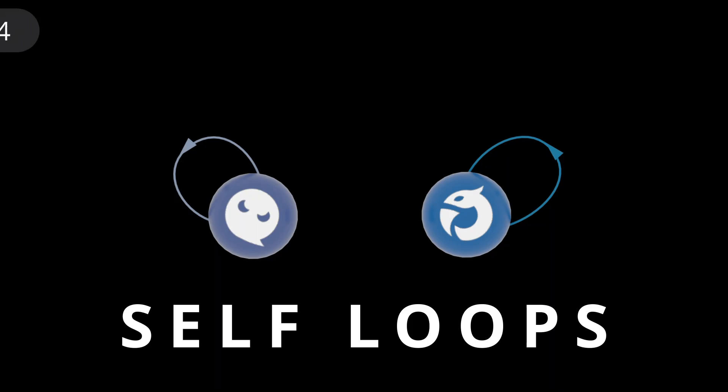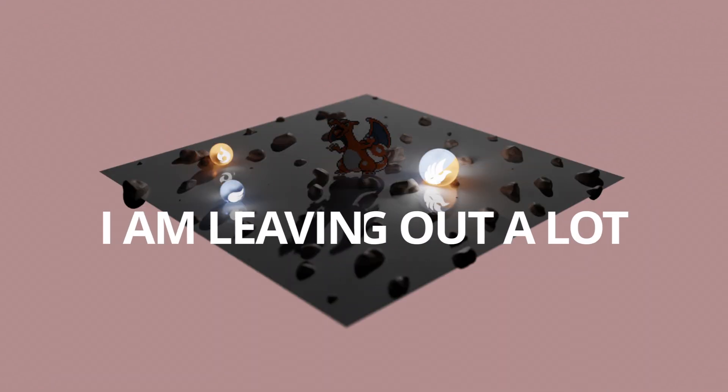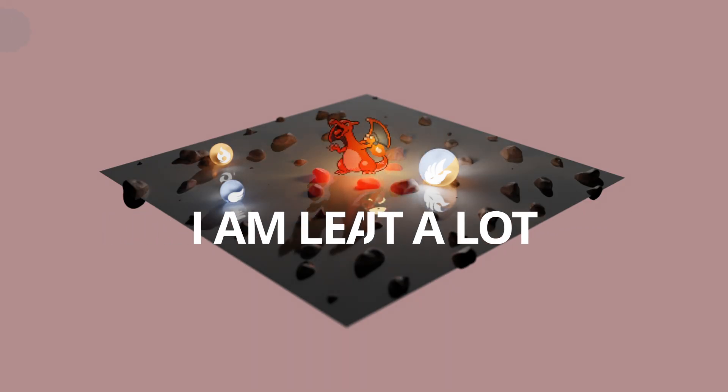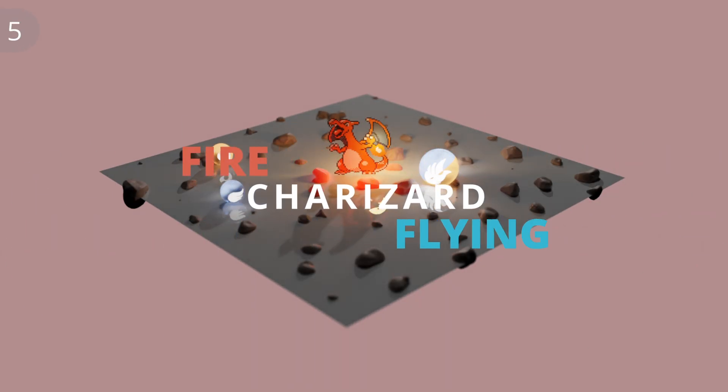I'll also point out that the Pokemon network has self-loops, meaning that some types are strong against themselves. I do want to emphasize here that this is a very naive analysis. A more detailed approach would either take into account the fact that Pokemon may actually possess up to two types at a time, which would require 171 nodes, or, much more ambitiously, we could use all 900 Pokemon as the network nodes.